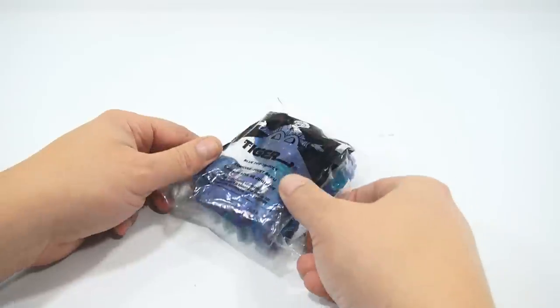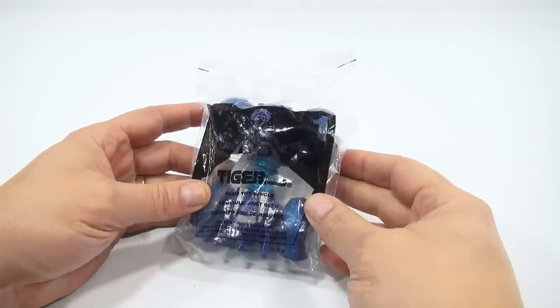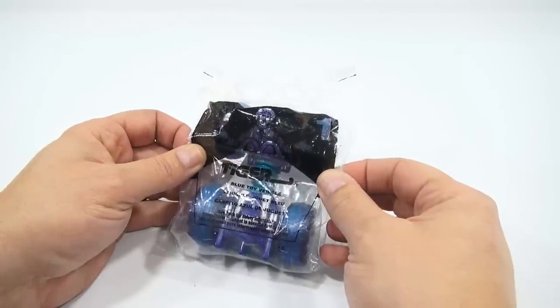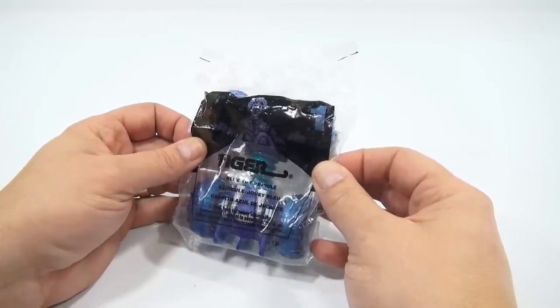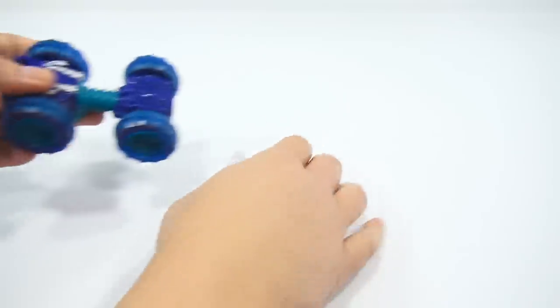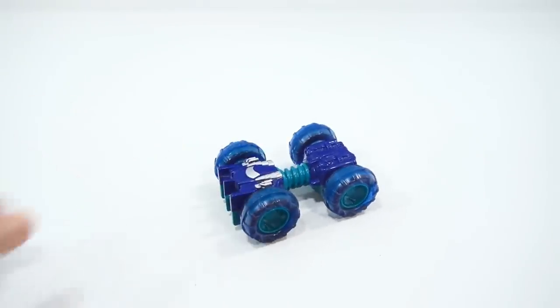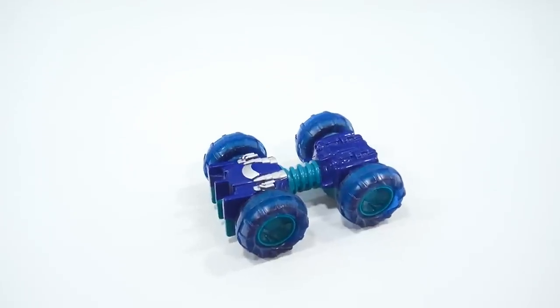All right, here we go. The number one toy is the blue vehicle, blue toy vehicle. Pretty cool. Let's get that out of the package and see what it does. There is an instruction sheet with it, so that always helps. Okay, that's cut. Here's the sheet if you want to take a look at that. I know it's hard to see so far away on the white, but I'll hold it up for you. Let me set this here so you get a good look at that. And we'll check out the instructions here.